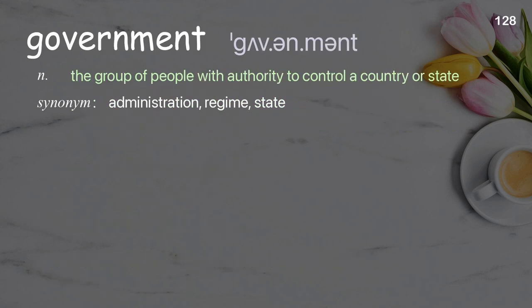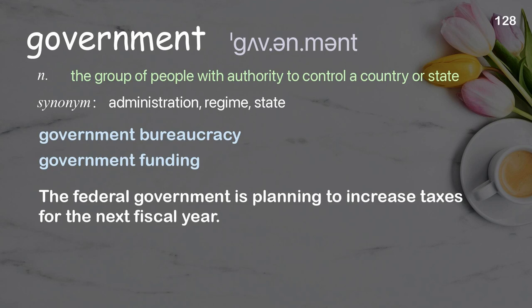Government: the group of people with authority to control a country or state. Examples: government bureaucracy, government funding. The federal government is planning to increase taxes for the next fiscal year.